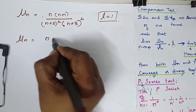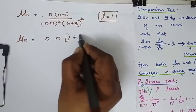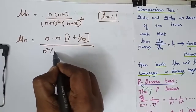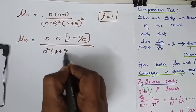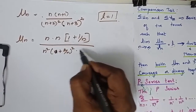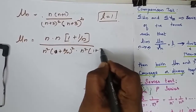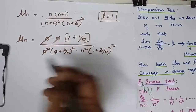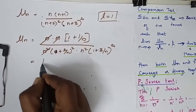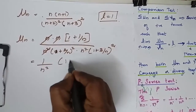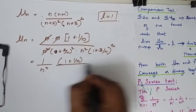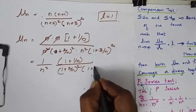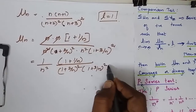My u(n) is equal to: when I take n commonly outside I will have (1 + 1/n); here when I take n² I will have (1 + 2/n)²; and again I take n², giving (1 + 3/n)². So cancelling, I will have 1 over n² times (1 + 1/n) divided by (1 + 2/n)² times (1 + 3/n)².